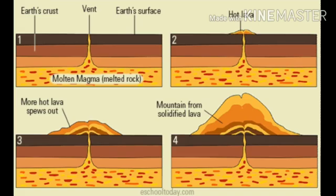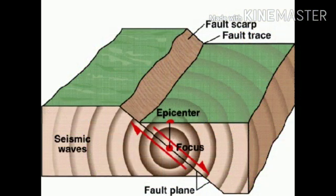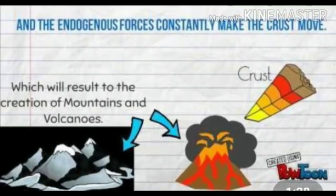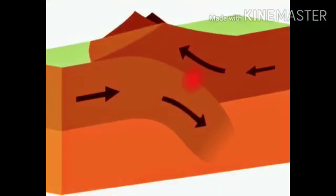Internal processes occur inside the surface of the earth, beneath the crust. Internal processes like volcanic eruptions and shifting of tectonic plates are caused by intense heat in the earth's core. This causes molten rock in the mantle layer to move, and as it moves, parts of the earth's surface are either pushed up, pulled down, bent, or broken, creating new kinds of landforms.